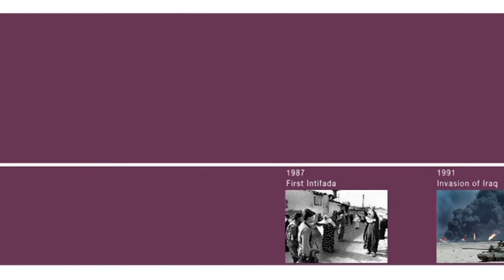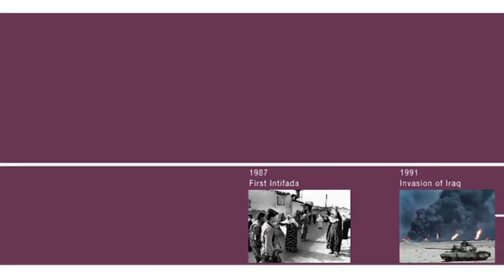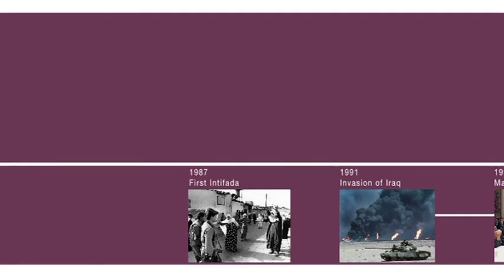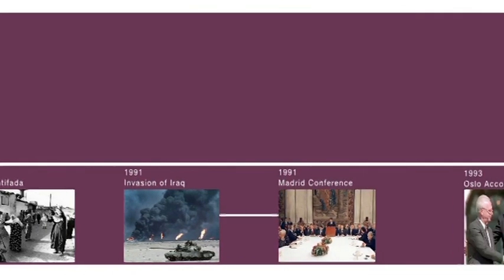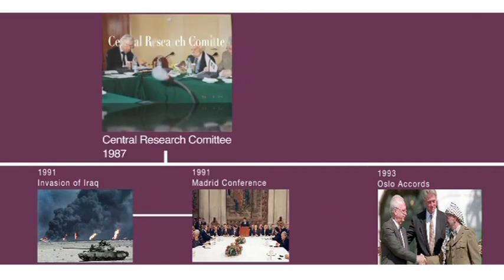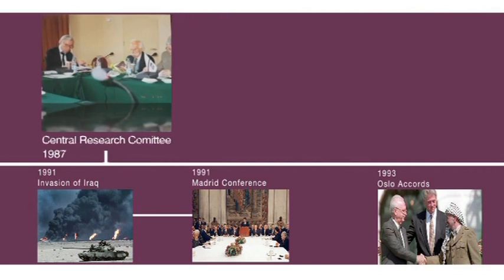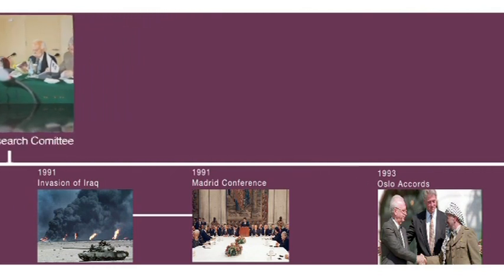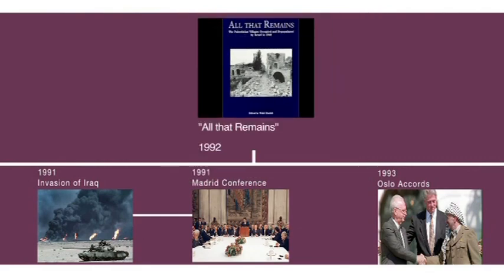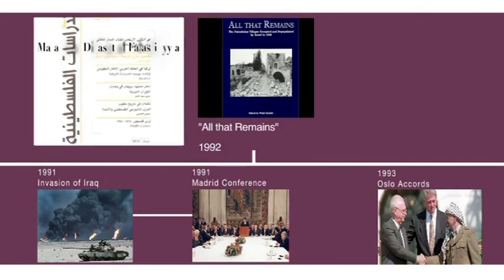The late 1980s and early 1990s were marked by several major political events on the Palestinian struggle scene: the first Intifada in 1987, followed by the Madrid Conference in 1991 and the signing of the Oslo Accords in 1993. During that period, IPS continued to consolidate its work and structure with the establishment of a central research committee. Two major publications were produced: All That Remains and Majallat al-Dirasat al-Filastiniyya.